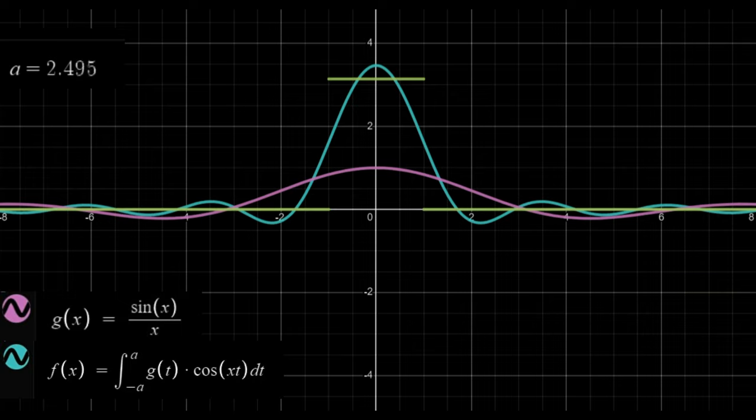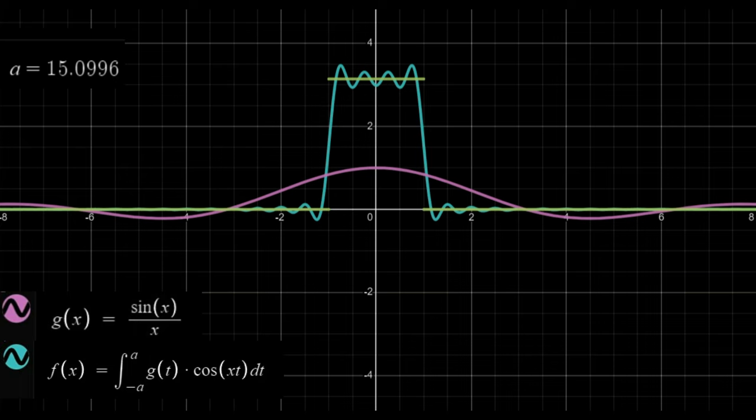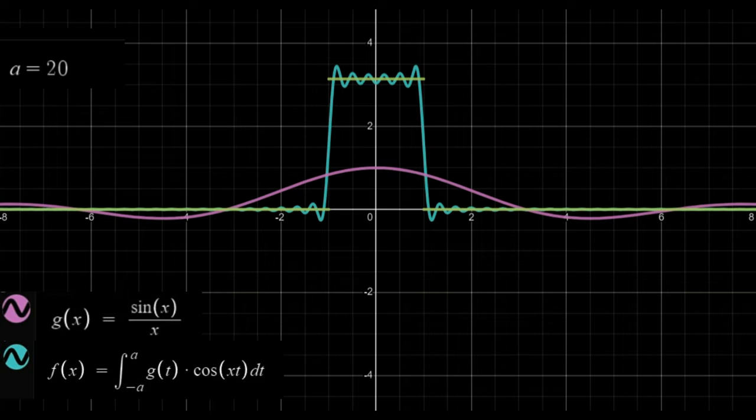To put it shortly, the Fourier transform at a certain frequency measures how much does the function overlap with cosines and sines of said frequency. Doing so for all frequencies will give us a new function of omega.